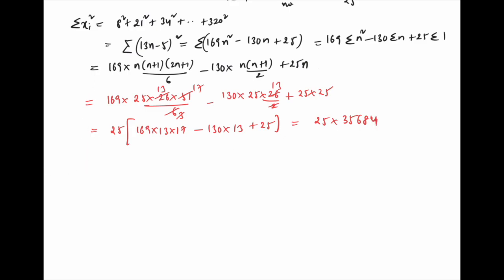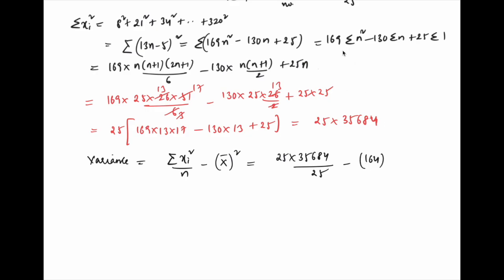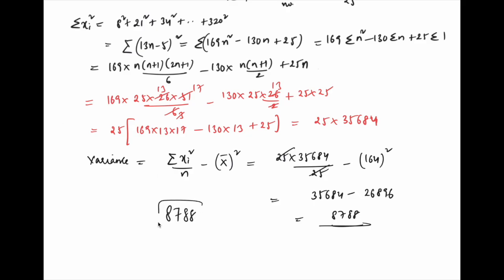The variance formula is Σxᵢ²/n − (mean)². This equals (25 × 35,684)/25 − 164² = 35,684 − 26,896. After calculation, the variance is 8788.